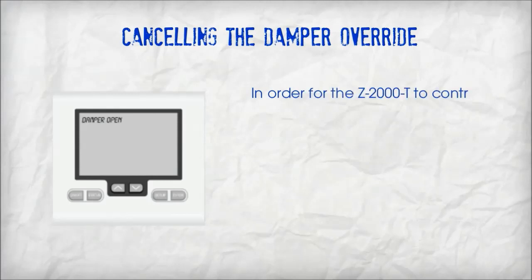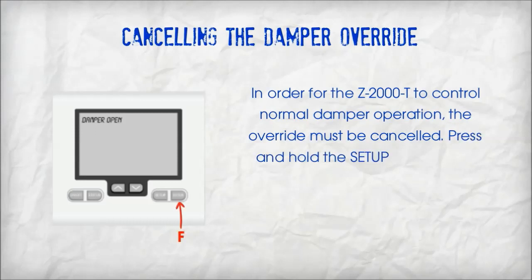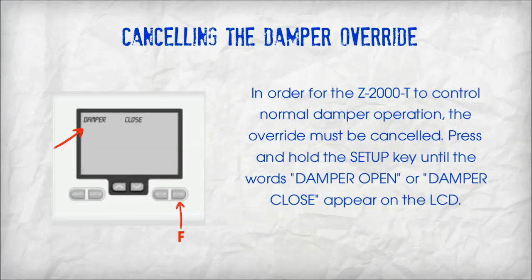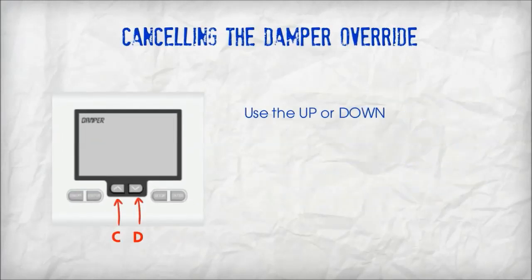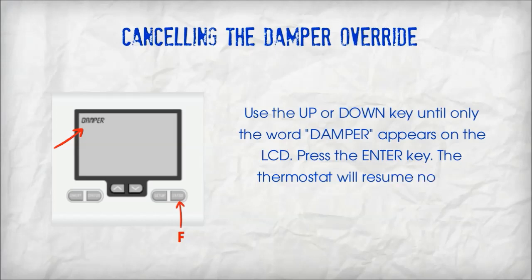In order for the Z2000T to control normal damper operation, the override must be cancelled. Press and hold the setup key until the word 'damper open' or 'damper close' appears on the LCD. Use the up or down key until only the word 'damper' appears on the LCD, then press the enter key. The thermostat will resume normal operation.